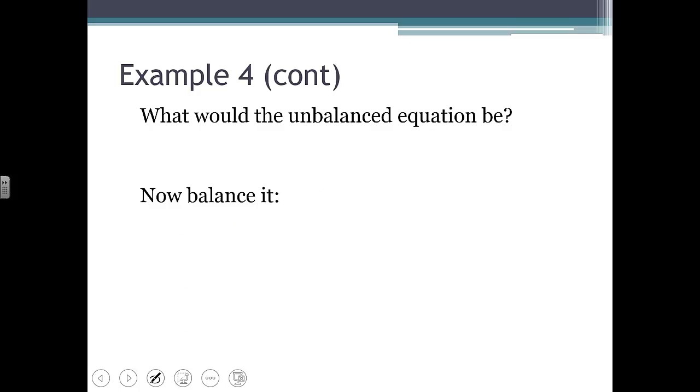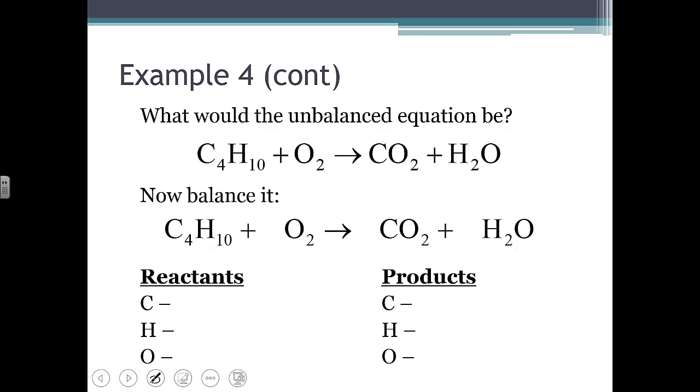So let's write our unbalanced equation. And here it is. Now we need to balance it. On the left, we have four carbons and ten hydrogens and two oxygens as written. On the right side, we have one carbon, two hydrogens, and be careful - I've got oxygen in both of these compounds, so I've got two and one makes three.